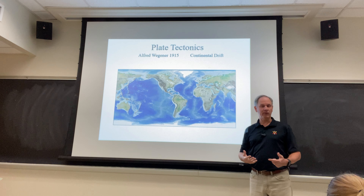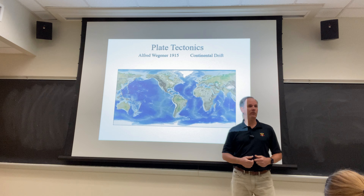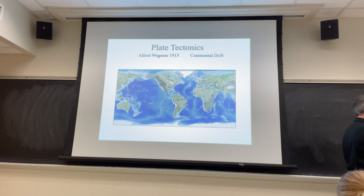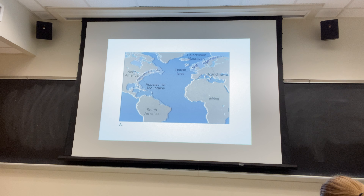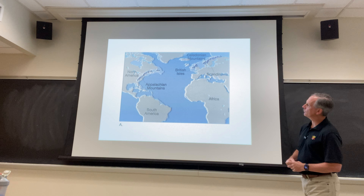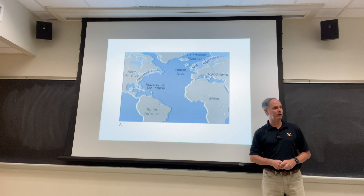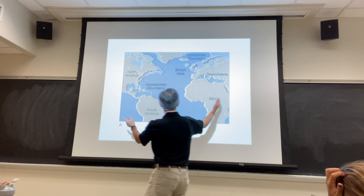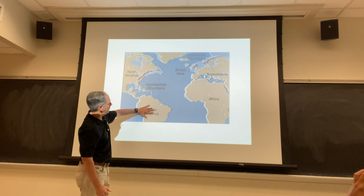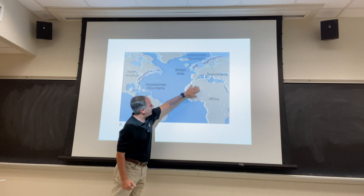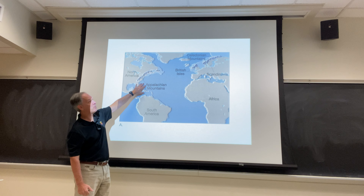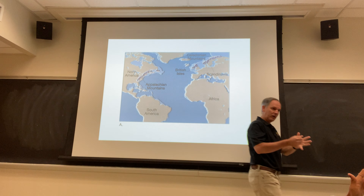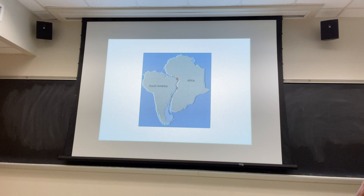His idea is that the continents are sort of drifting around. If you look at a basic map of the world and focus on the Atlantic Basin, it kind of looks like the pieces of a jigsaw puzzle. You can slide South America right into the nook in Africa, and close the top and bottom parts of the Atlantic — it kind of looks like you're putting jigsaw puzzle pieces together.